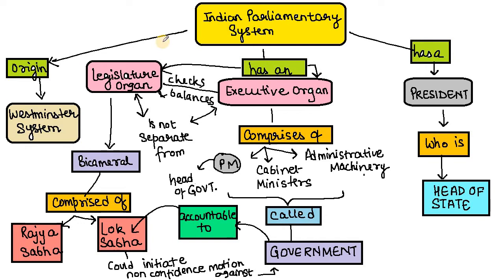We have studied three kinds of functions of parliament: legislative functions, executive functions, and financial functions. In executive functions we studied motions. In financial functions, parliament is the ultimate authority — the executive cannot spend a single paisa without parliamentary approval. For this we have the union budget, which is prepared by the cabinet and submitted for approval to parliament. All proposals to impose taxes must also be approved by parliament.